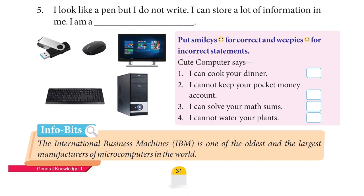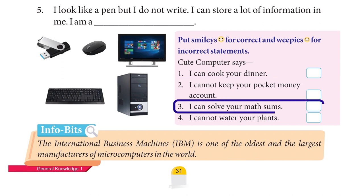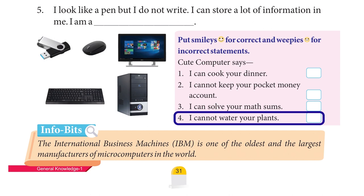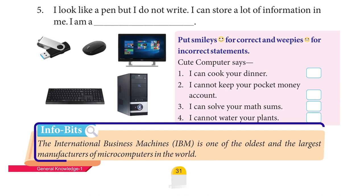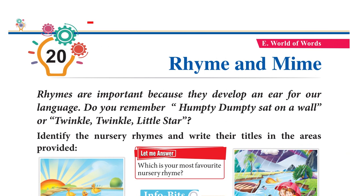Put smileys for correct and weepies for incorrect statements about what a computer can do. Can cook your dinner — weepies. Cannot keep your pocket money account — weepies. Can solve your math sums — smiley. Cannot water your plants — smiley. Info Bits: IBM (International Business Machines) is one of the oldest and largest manufacturers of microcomputers in the world.